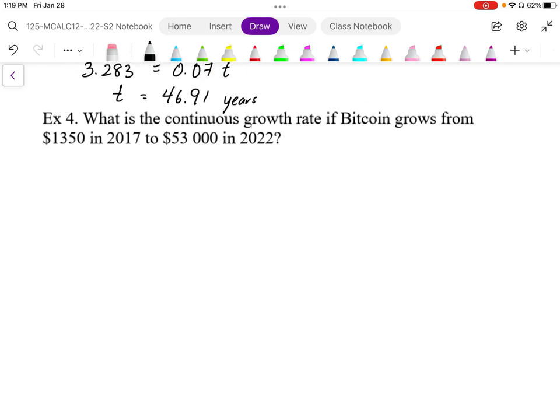So here, we want to find the continuous growth rate of Bitcoin. From 2017 to 2022, it grew from $1,350 per coin to about $53,000 per coin. So we have the end amount, $53,000. We have our starting amount, $1,350. And we have our continuous growth rate.